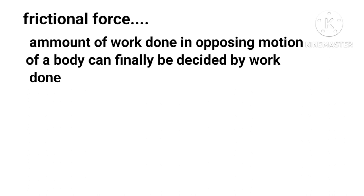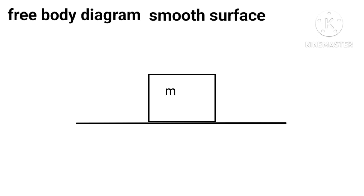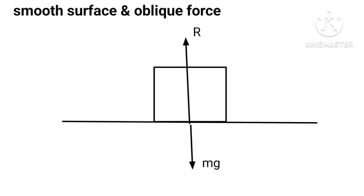The amount of work done in opposing motion decides the friction coefficients, hence μs > μk > μr. Let a body of mass m be at rest on a smooth horizontal surface, with two forces acting at the point of contact: weight mg acting vertically downwards, and reaction R acting vertically upward. If a horizontal pull F is applied on the body, with acceleration a, then F = ma.